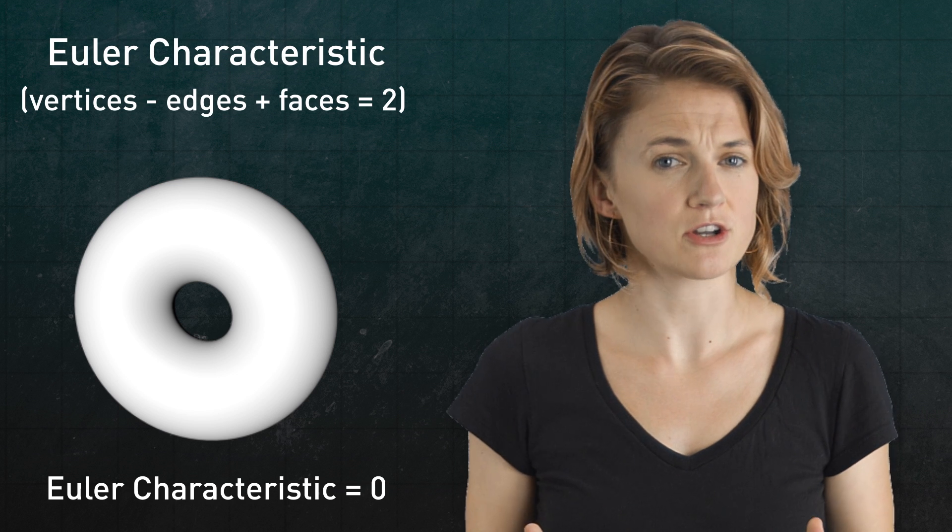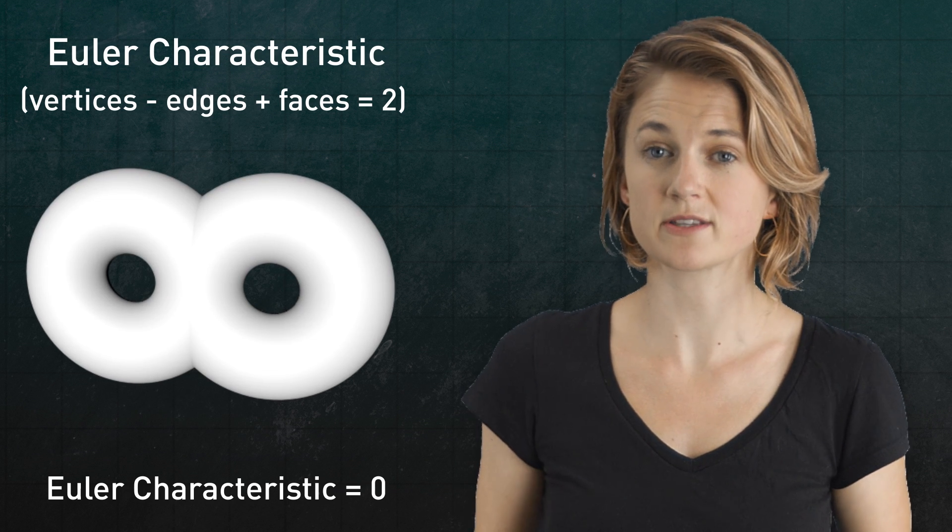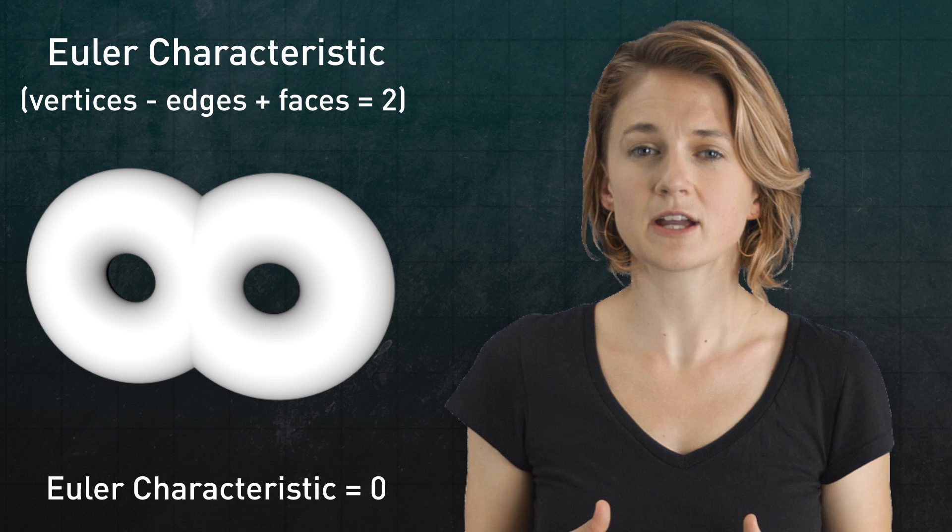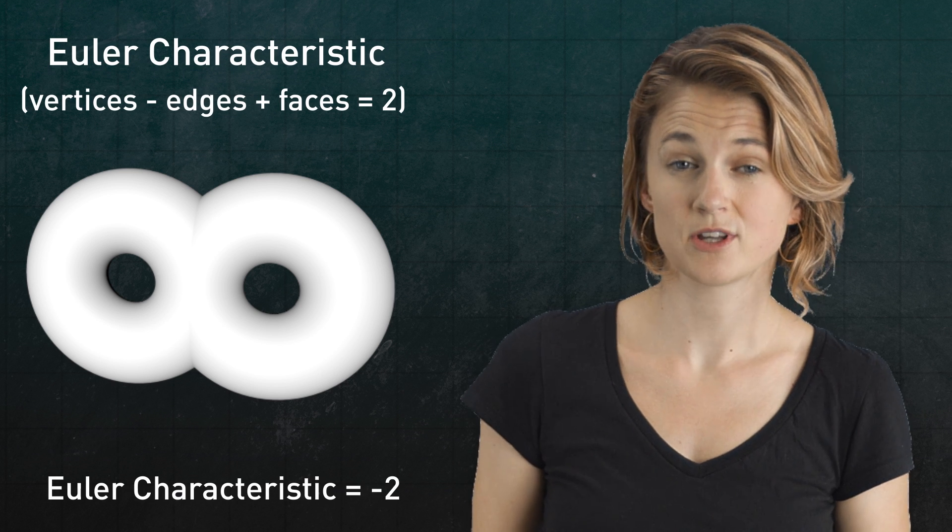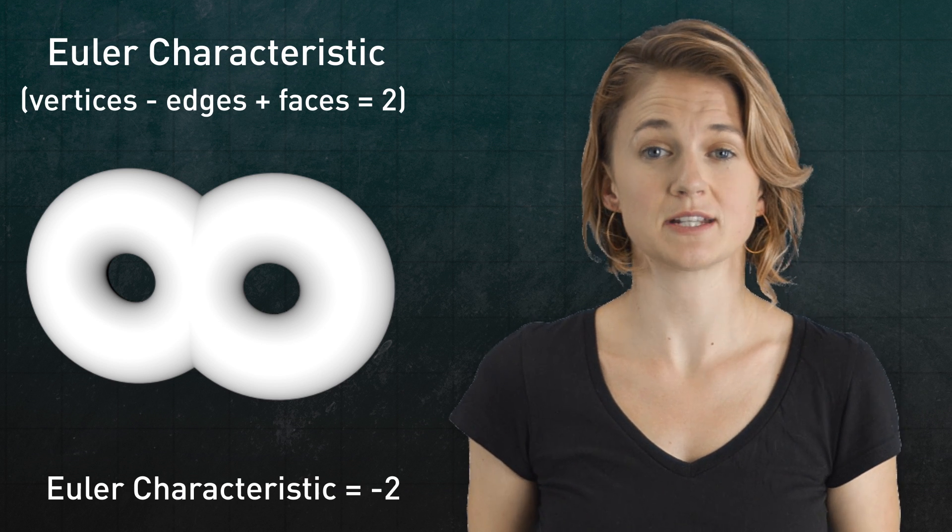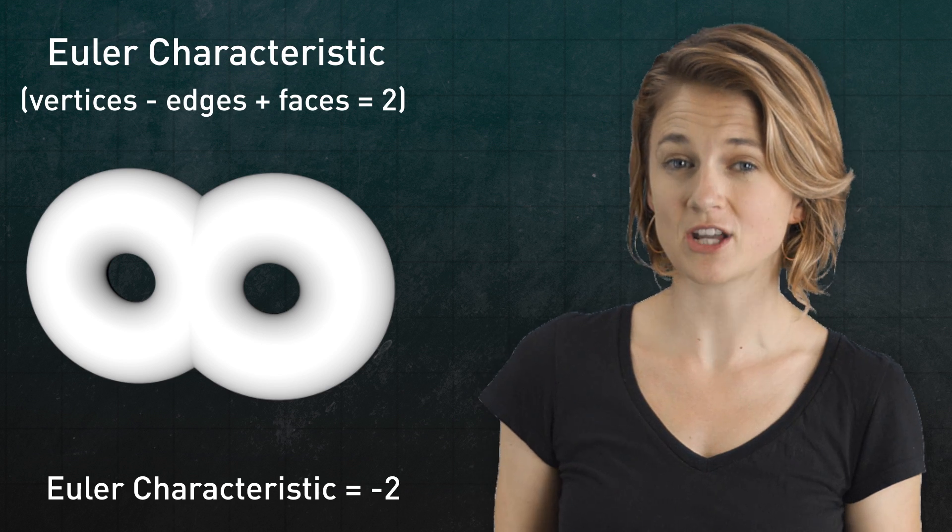What about another chunk, so there's two holes in the torus? Well, the Euler characteristic drops to negative two. You can see that the Euler characteristic tells us something about the topology of a surface.